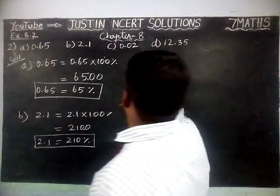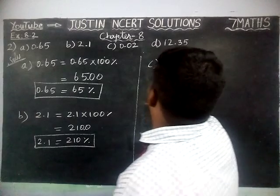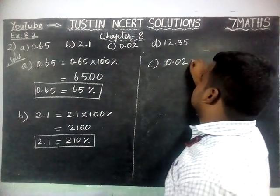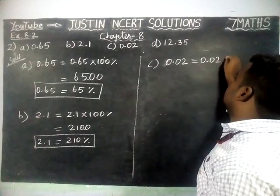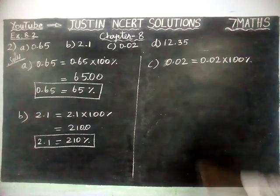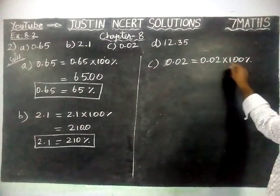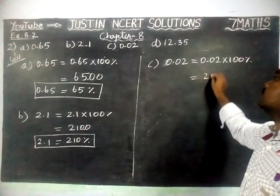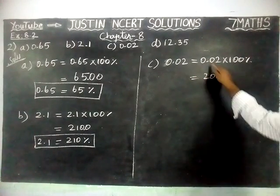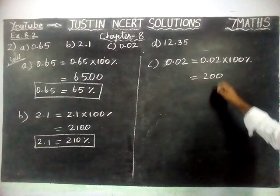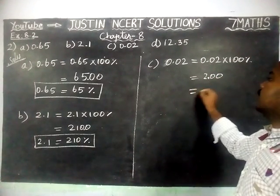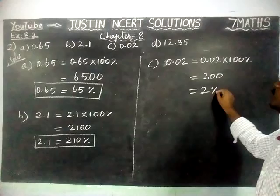Part C: 0.02 is equal to 0.02 into 100%. Now, forget about the decimal point, just multiply 2 into 100, which is equal to 200. And here we have 2 decimal places, so from the right hand side, 1, 2 — we place the decimal point after 2 digits.